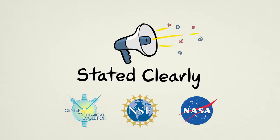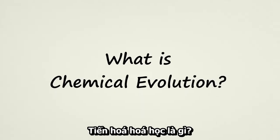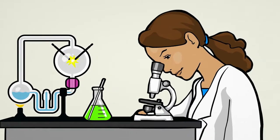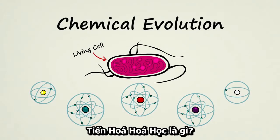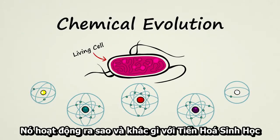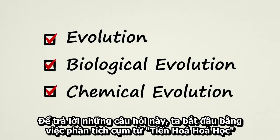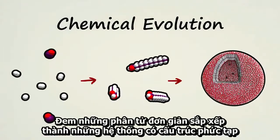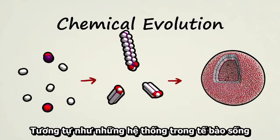Stated Clearly presents: What is Chemical Evolution? Scientists have reason to think that the first living cells on Earth came about through a natural process called chemical evolution. What is chemical evolution? How does it work? And how is it different from biological evolution? To answer these questions, we'll start by dissecting the terms and then look at an example of how chemical evolution can take simple molecules and organize them into complex structured systems similar to those found in living cells.